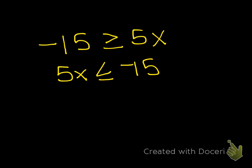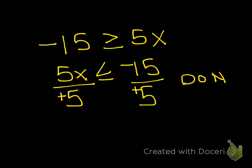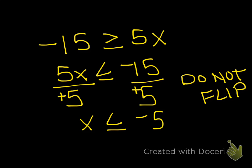Make sure they match — the pointy part is pointing to the 5x, less than, and the greater than is pointing towards the negative 15. Now, to solve this, you are going to divide by 5. Did you divide or multiply by a negative number? You did not — this is a positive 5 and a positive 5. Do not flip. It doesn't matter if your answer is negative; it's about what you multiply or divide by. It's only when you multiply or divide by a negative number that the sign flips, because multiplying by a positive keeps the sign the same.